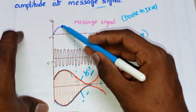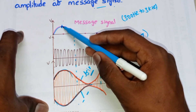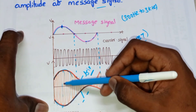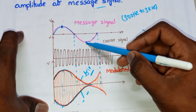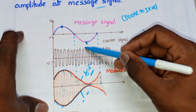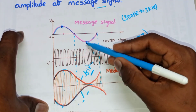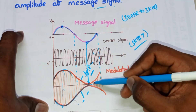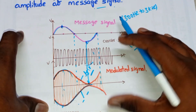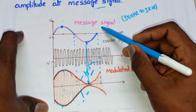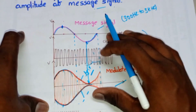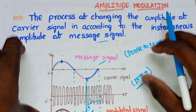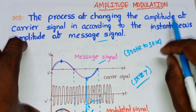Whenever the amplitude of the message signal is more at a given point, the amplitude of the carrier is also more — according to amplitude modulation. Where the amplitude of the message signal is very less, the amplitude of the carrier signal also becomes less. The amplitude of the carrier signal varies in accordance with the amplitude of the message signal — this is the modulated signal, which is the result of amplitude modulation. In the next videos we will discuss the different types of amplitude modulations.